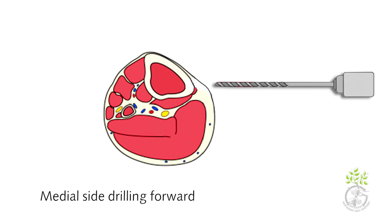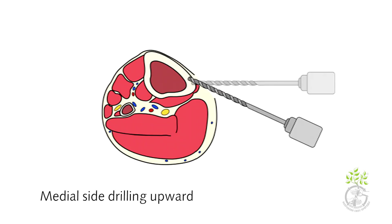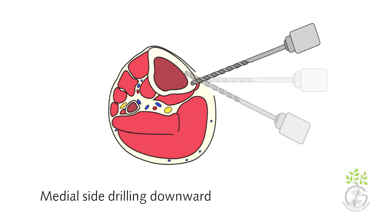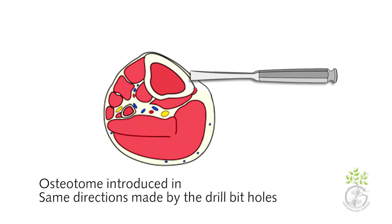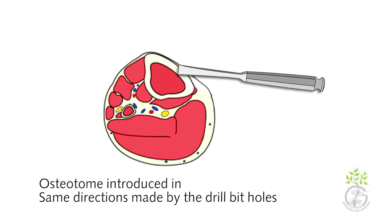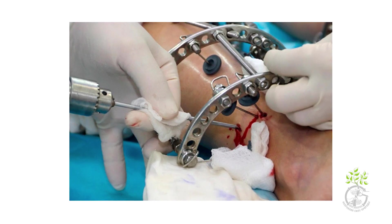Another small one centimeter incision is made over the anteromedial aspect of the proximal tibia, opposing the previous one, performing drilling in forward, upward, and downward directions. An osteotome is then introduced and the bone is cut in the same directions.